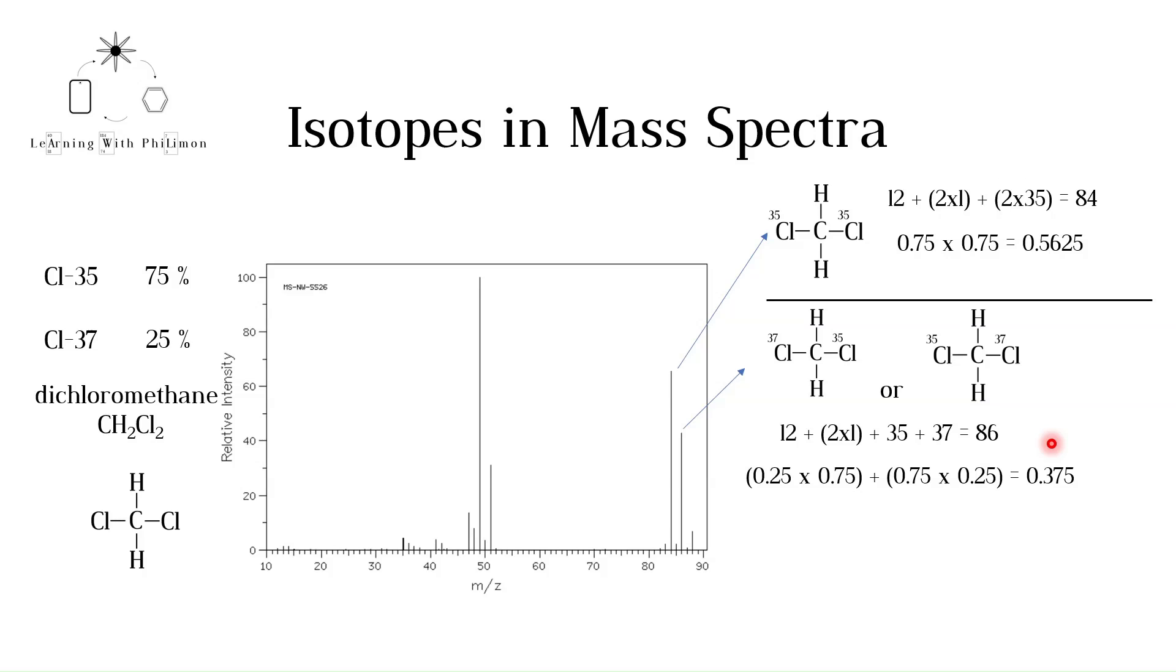The third option is having two Cl37 isotopes in the molecule. The relative molecular mass is 88. The probability is calculated using this expression, and is equal to 0.0625.